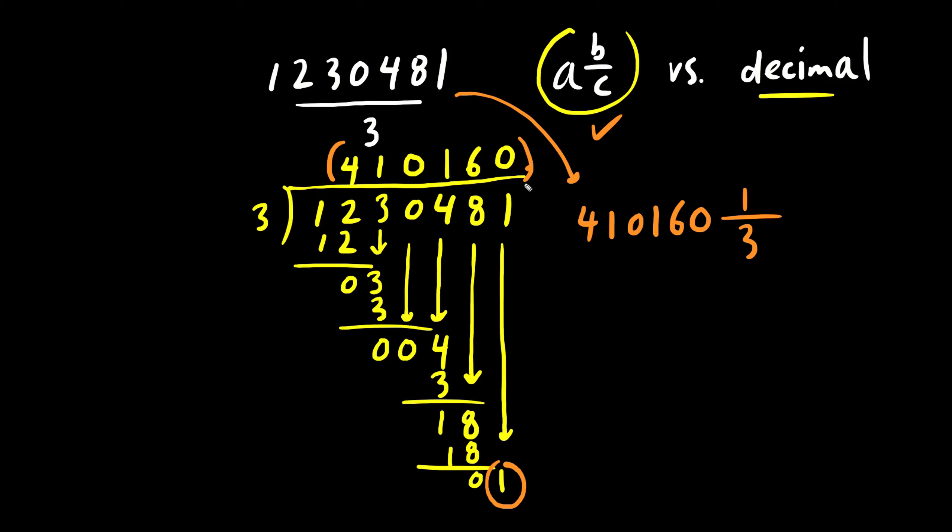Now if we want to continue on with decimals, we could. We put a dot here. And we drop the next mystery zero. And this here is now a ten. Three times what is ten? Let's try three. Three times three is nine. We put a nine down here. Ten minus nine is one. And we drop a mystery ghost of a zero here. And what times three is ten? Three times three is nine again. And you can see that we're running out of space here. But when you say nine and you subtract and you drop another zero here, this pattern repeats over and over again. So we get an infinite number of threes. This line means repeater. So we know that this number is equivalent to 410160.3 repeater.